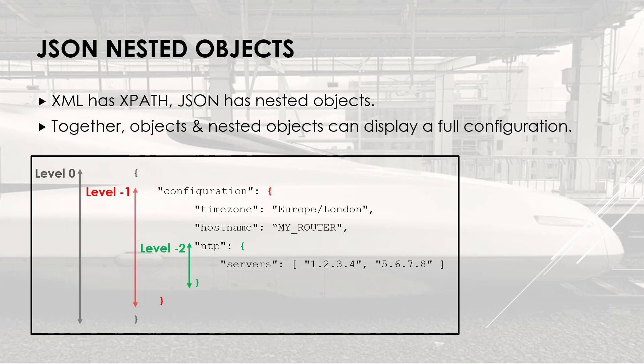If you paid attention, you probably noticed that the server IPs are stored in an array, because we have not one but several values here.